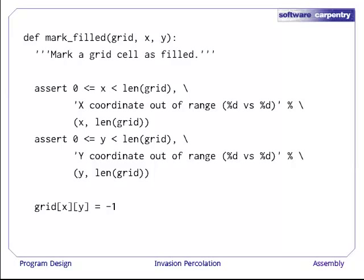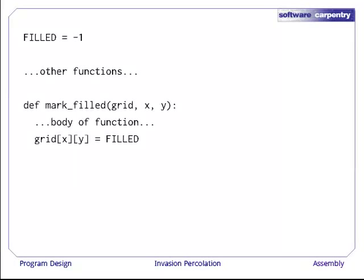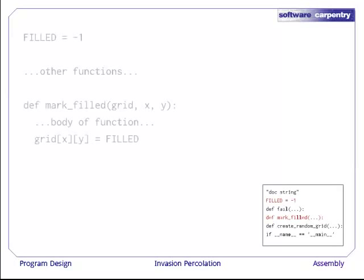The last line of this function assigns minus one to grid[x][y]. We're using minus one to indicate filled cells, but we don't know whether people are going to remember that when they're reading our code. If you say grid[x][y] assigned minus one, it's not immediately clear what you're doing. Let's make a small change right now. Near the top of our program, we'll create a variable called FILLED and give it the value of minus one so that in our function, we can say grid[x][y] is assigned FILLED. FILLED is written in capital letters because we think of it as a constant, and by convention, constants are normally written in all caps. Once again, the box in the lower right shows us the structure of our file. The constant goes near the top of the program, because that's where people will expect to find it, and our mark_filled function goes in the middle.